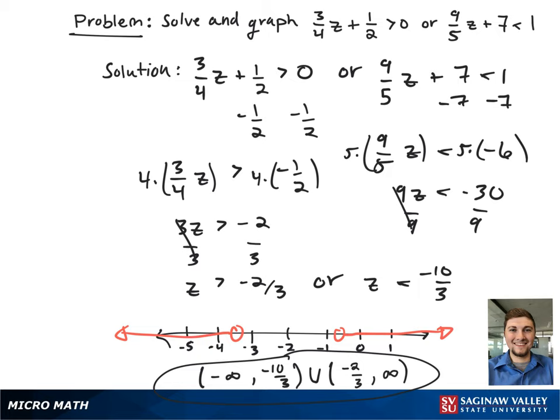In interval notation, this looks like an open-ended bracket from negative infinity to negative 10/3 in union with an open-ended bracket from negative 2/3 to infinity.